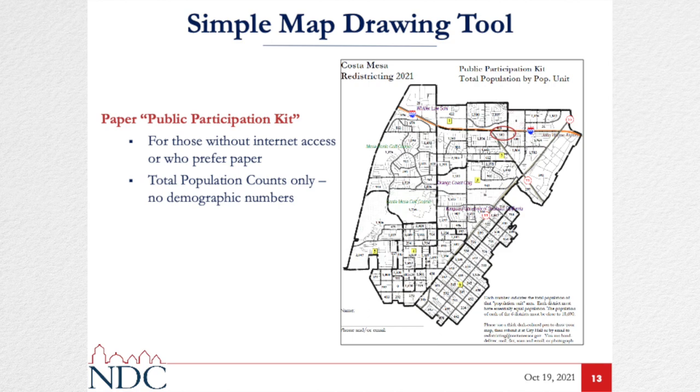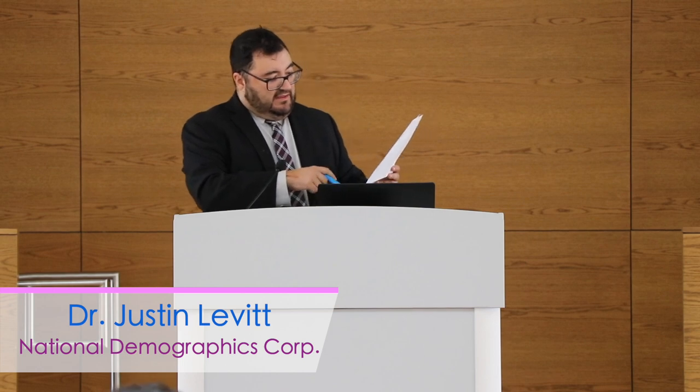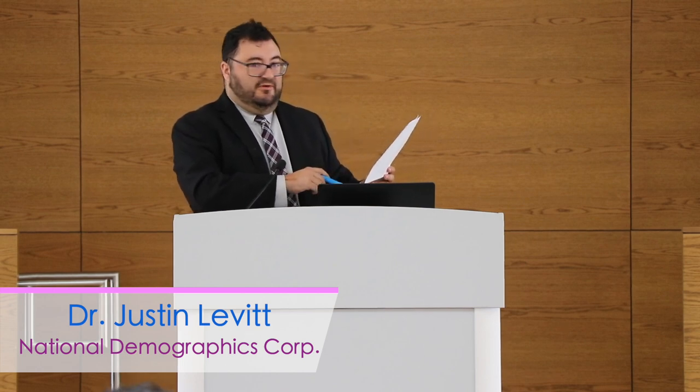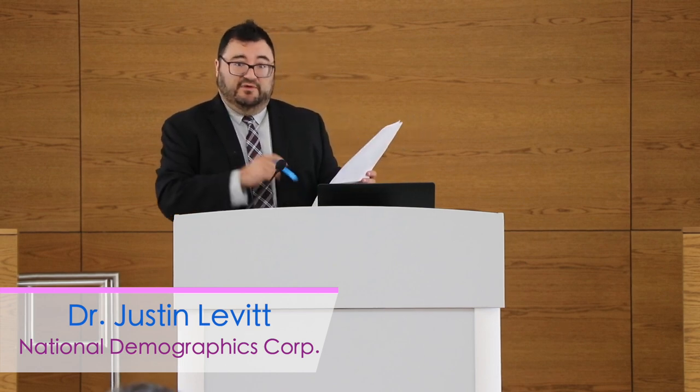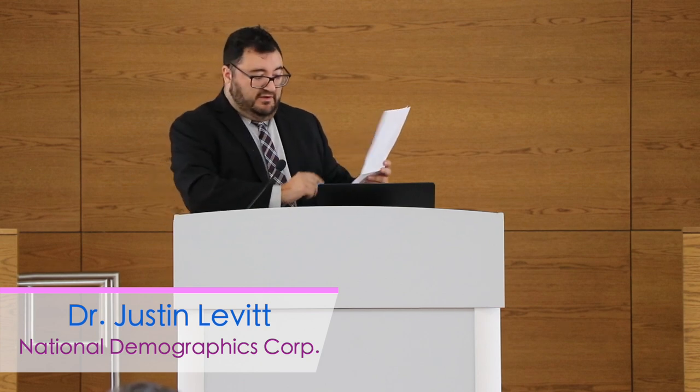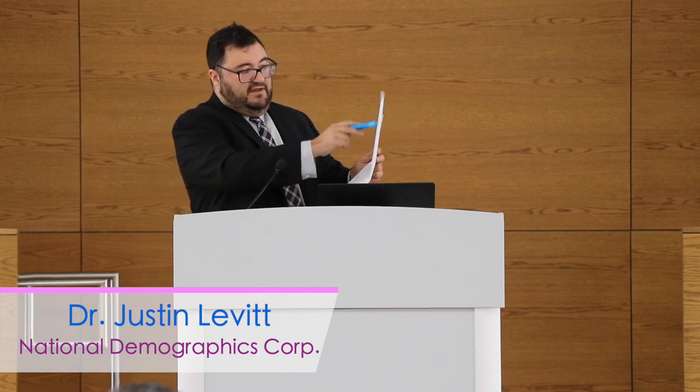If there's a boundary you want to use that isn't on the map, draw it in — we can work with whatever you provide. If you think a key boundary defines a community, put it in and then describe it. There's lots of blank space around the map for you to describe what you're doing. I'd encourage you to make notes about why you support the map you turn in, so that the council knows what kinds of communities of interest you're trying to capture.